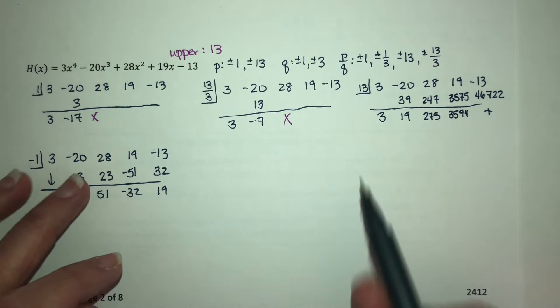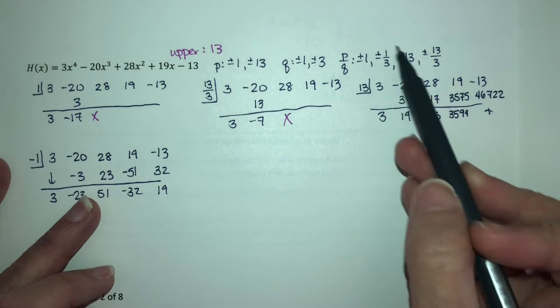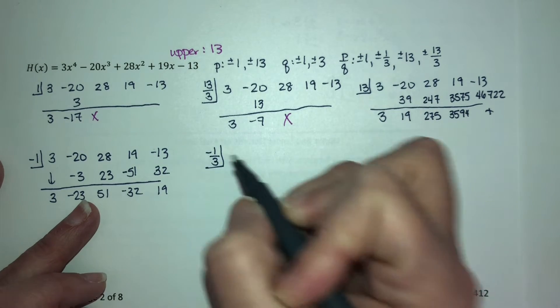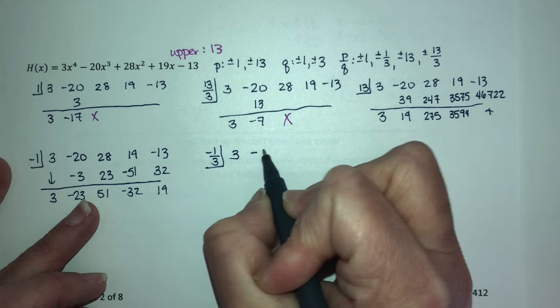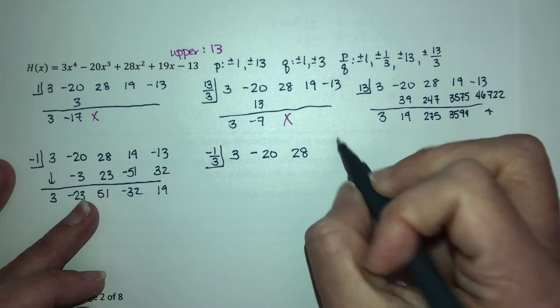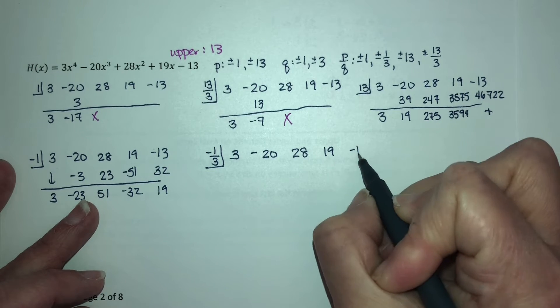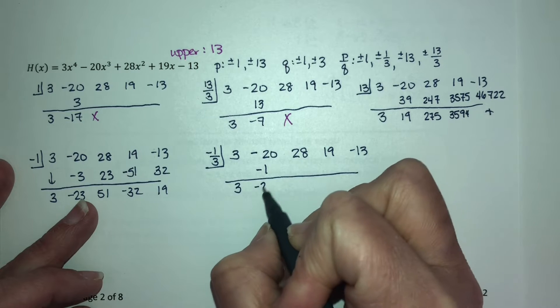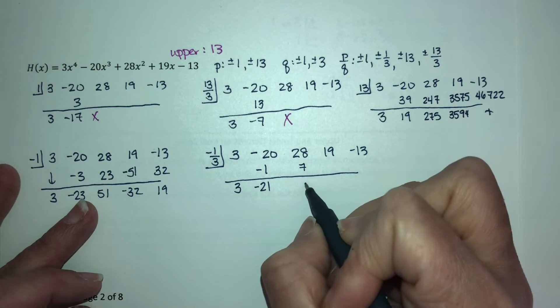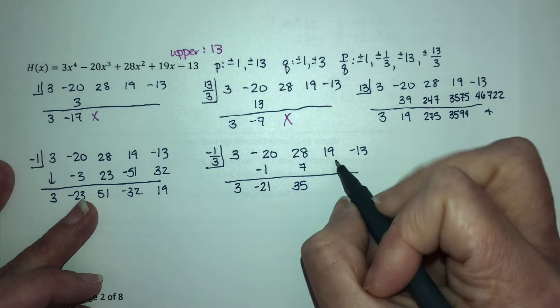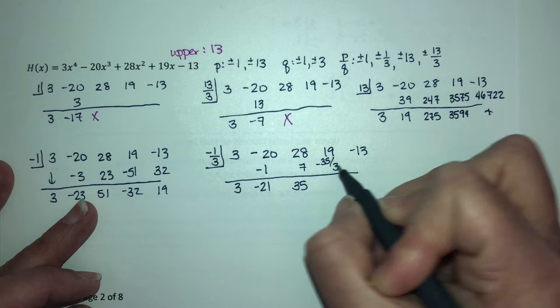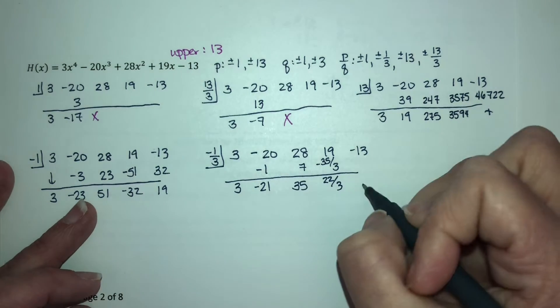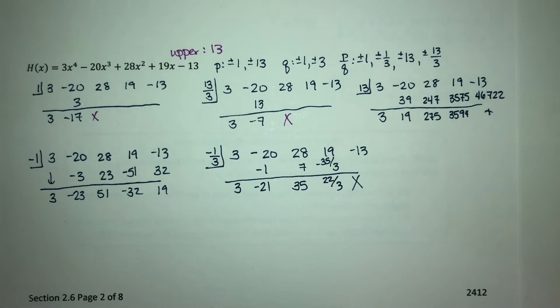Least upper bound, greatest lower bound. So now I need to check the number larger. I need to check negative one third, just to make sure. Bring down the 3, negative 1, negative 21, positive 7, 35, negative 35 thirds, which gives me 22 thirds. And I have two positives in a row. So that is also a no. My lower bound is negative 1.